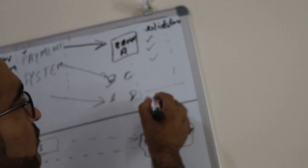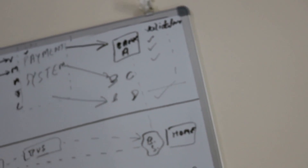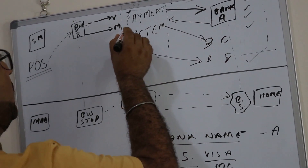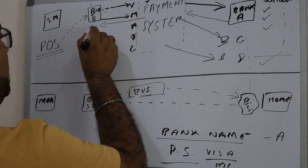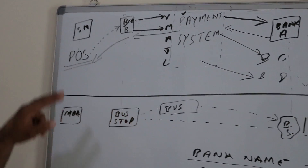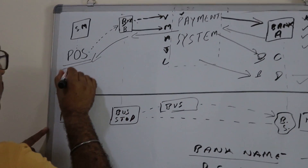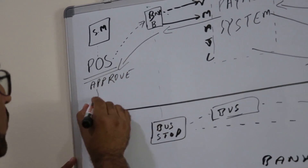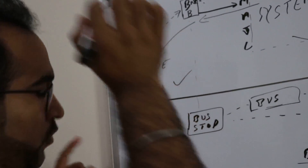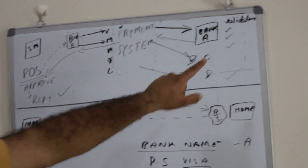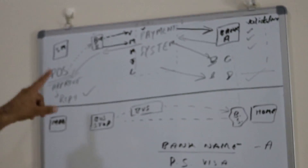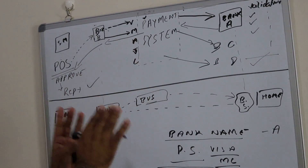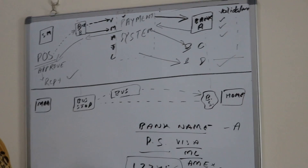Once all validations are performed, the issuing bank says the transaction is approved. They send a response back to the payment system, the payment system sends this response to Bank B, and Bank B sends this response back to the POS terminal. Once the response reaches the terminal, it displays a message that the transaction is approved, your receipt is printed, and you go home. This is a complete cycle of an authorization — just a basic example of a card authorization cycle.